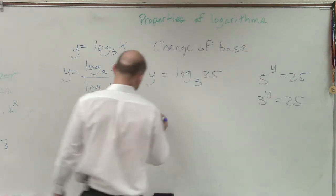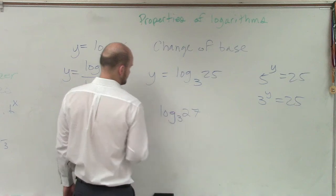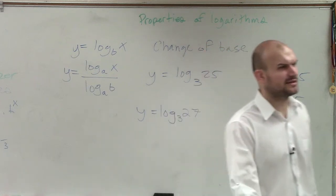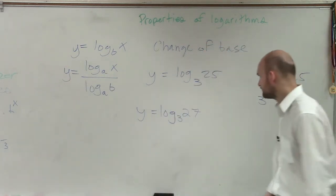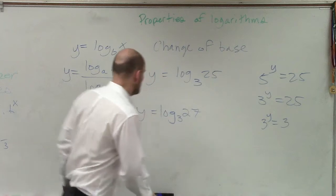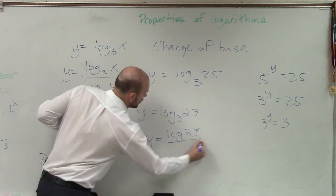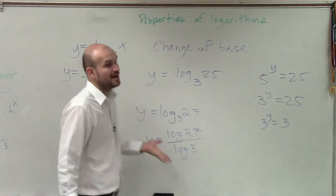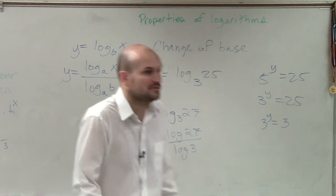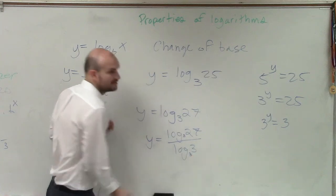Let me show an example. Let's do log base 3 of 27 equals y. The answer is y equals 3. Now let's verify with the change of base formula: y equals log of 27 over log of 3. For those with a calculator, just use base 10 — log base 10 of 27 divided by log of 3.